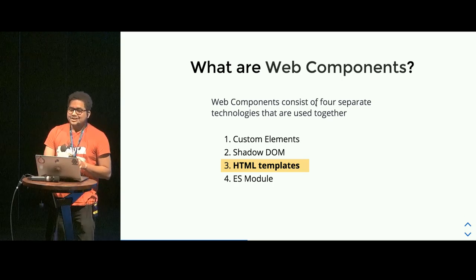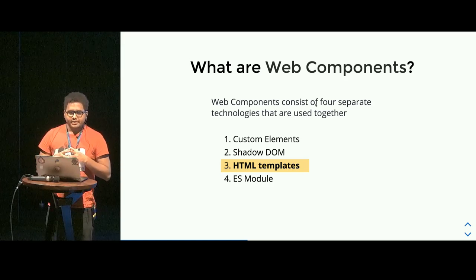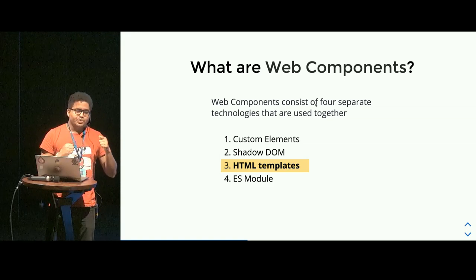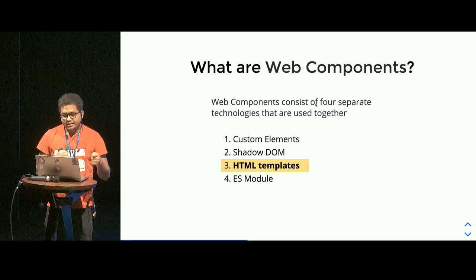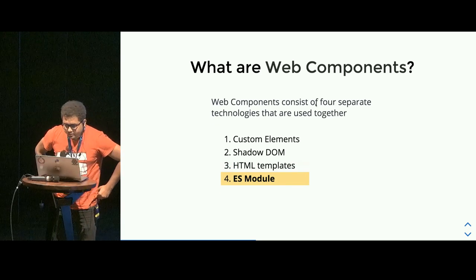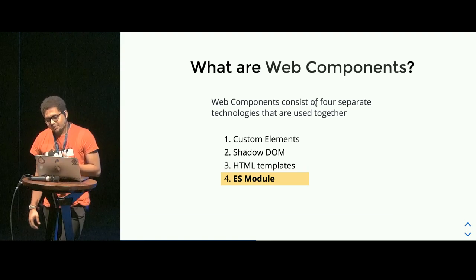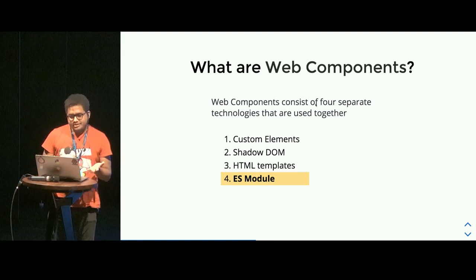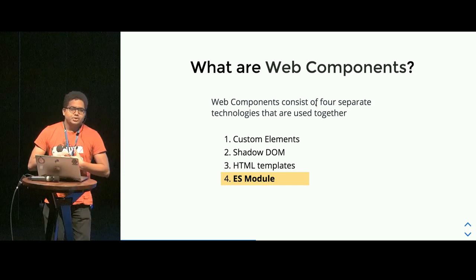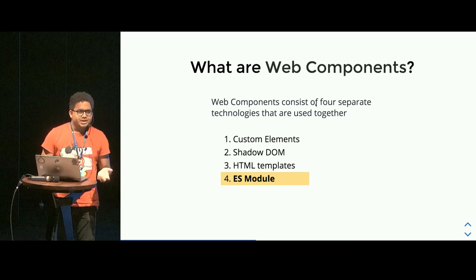HTML templates: an HTML template is just a mechanism to say that this template exists. The browser will not render anything within that template, but you have a way to handle it using JavaScript. That is how you do templating within the web component. ES module is just a JavaScript file from which you export — that's the bare basic understanding. You can export and import modules and functions, and call each other's functions to get that functionality where you want.